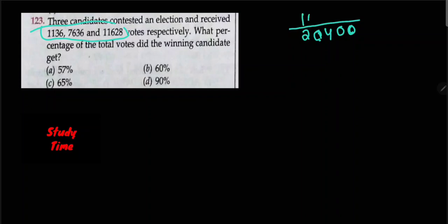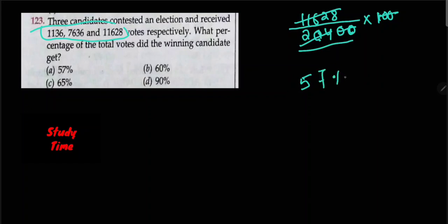What percent is required? 11628 into 100 divided by 20400 equals 57 percent. Option number A, answer 57%.